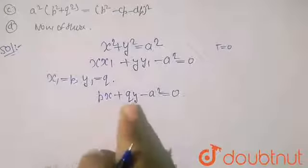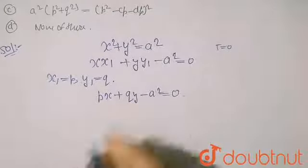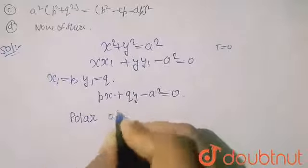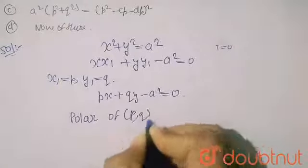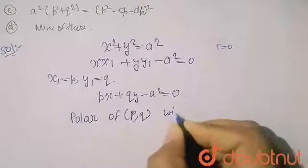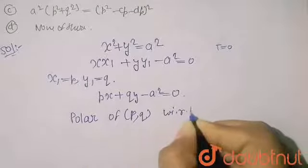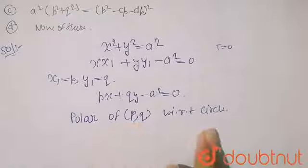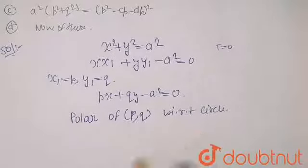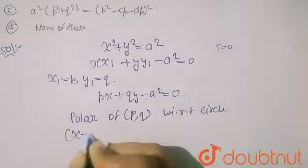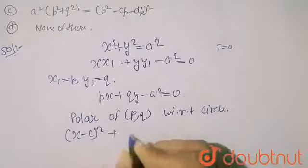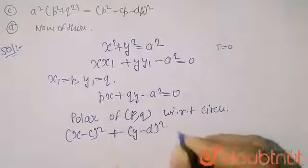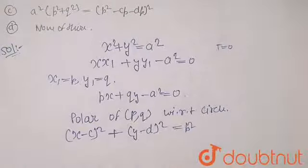So the polar of P,Q with respect to circle will be what? So we have to write the polar of P,Q with respect to circle equation. So that is (X-C)² + (Y-D)² = B².